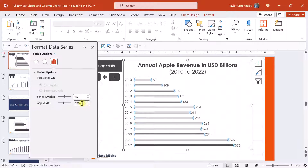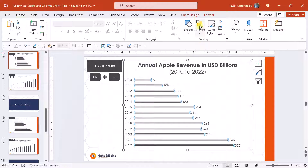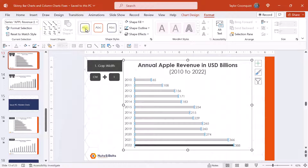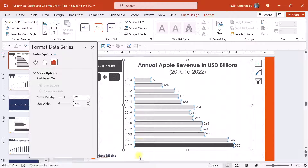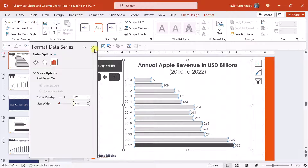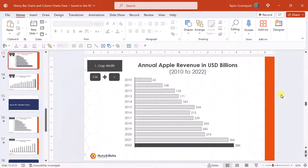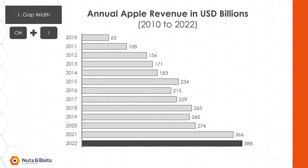You can immediately see that the default gap width came in at 219%. If you don't like to use keyboard shortcuts, you can also select your series, come up to the Chart Format tab, and click Format Selection — which is the same as hitting Control+1. For gap width, I recommend 50%, which immediately thickens up those skinny bar charts. I also have seen managers who like 75% — this is a stylistic difference. I really like 50%, so I'm going to select 50%, close out of the dialog box, hit Shift+F5, and you can see I no longer have those skinny bar charts.